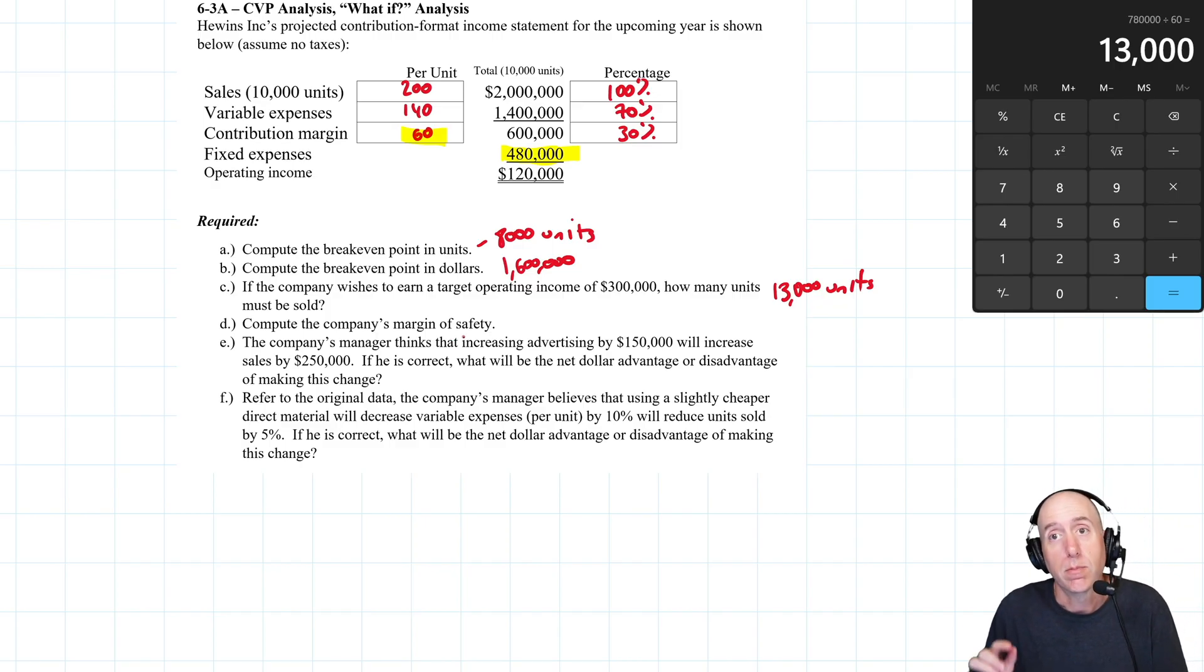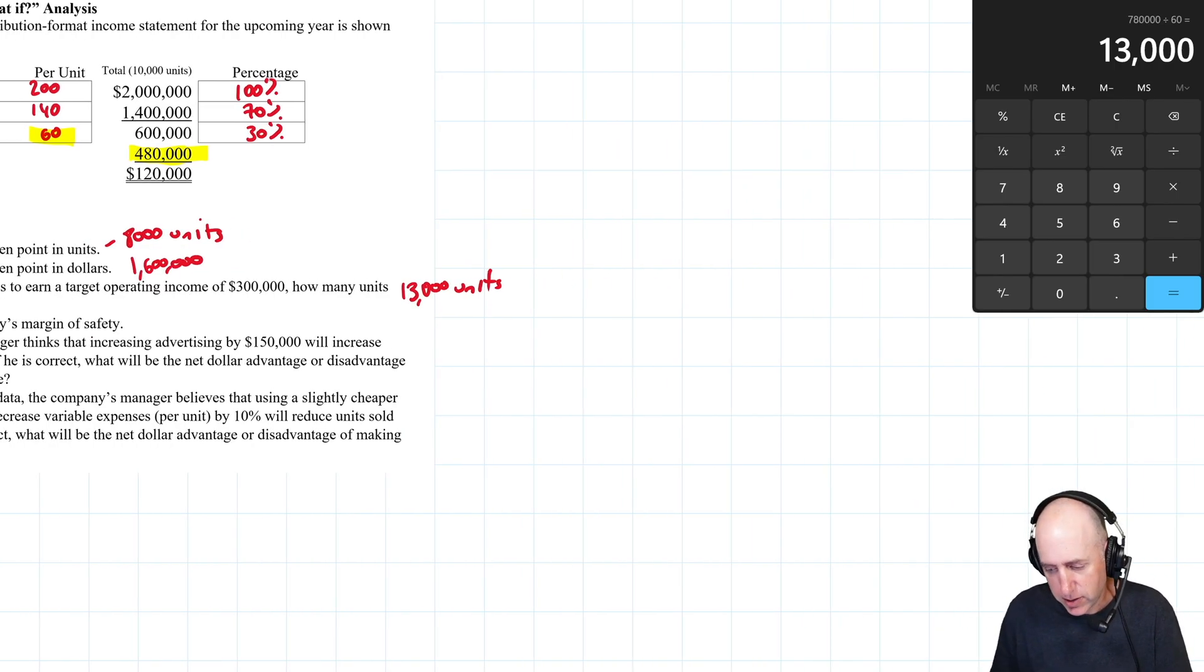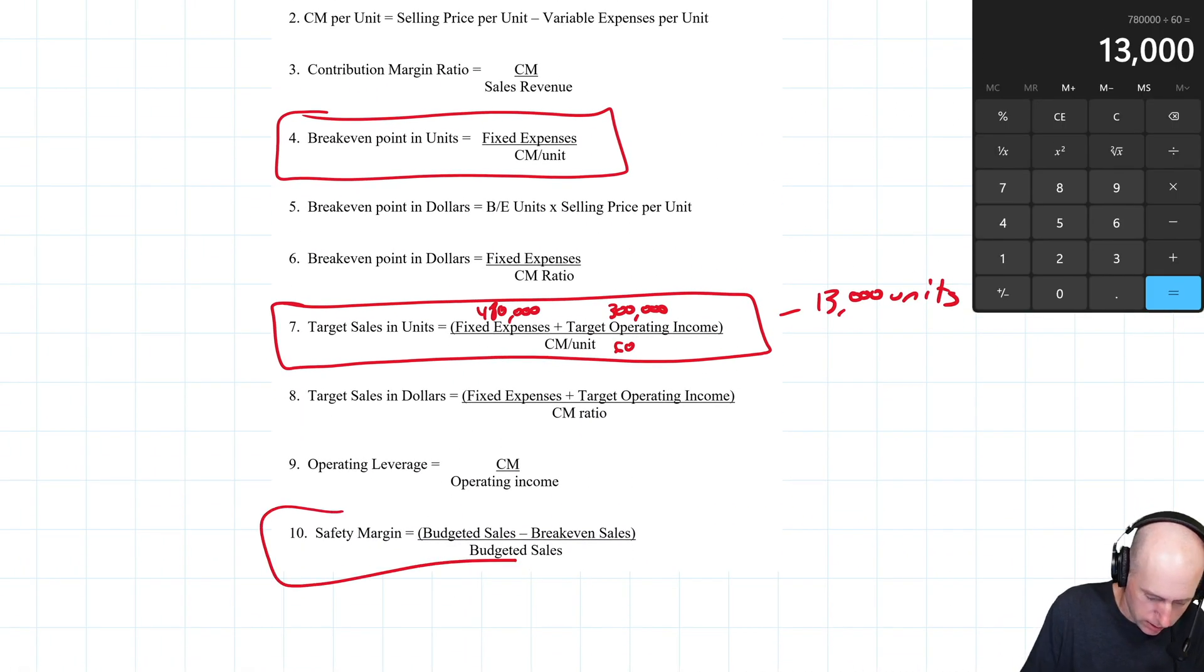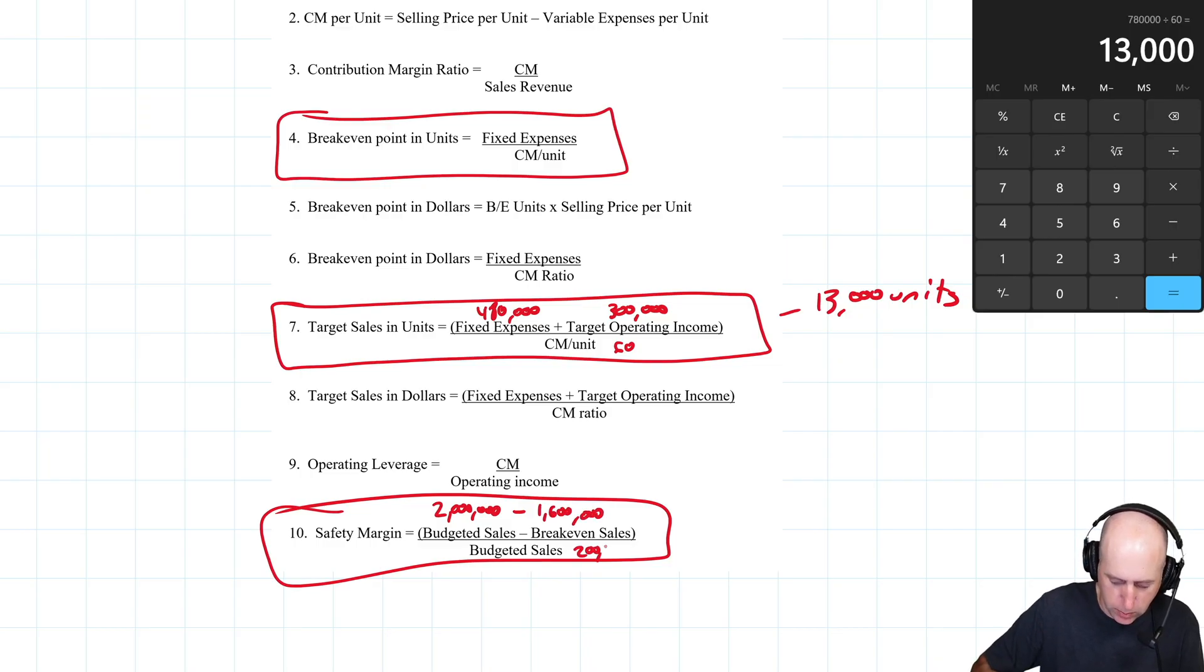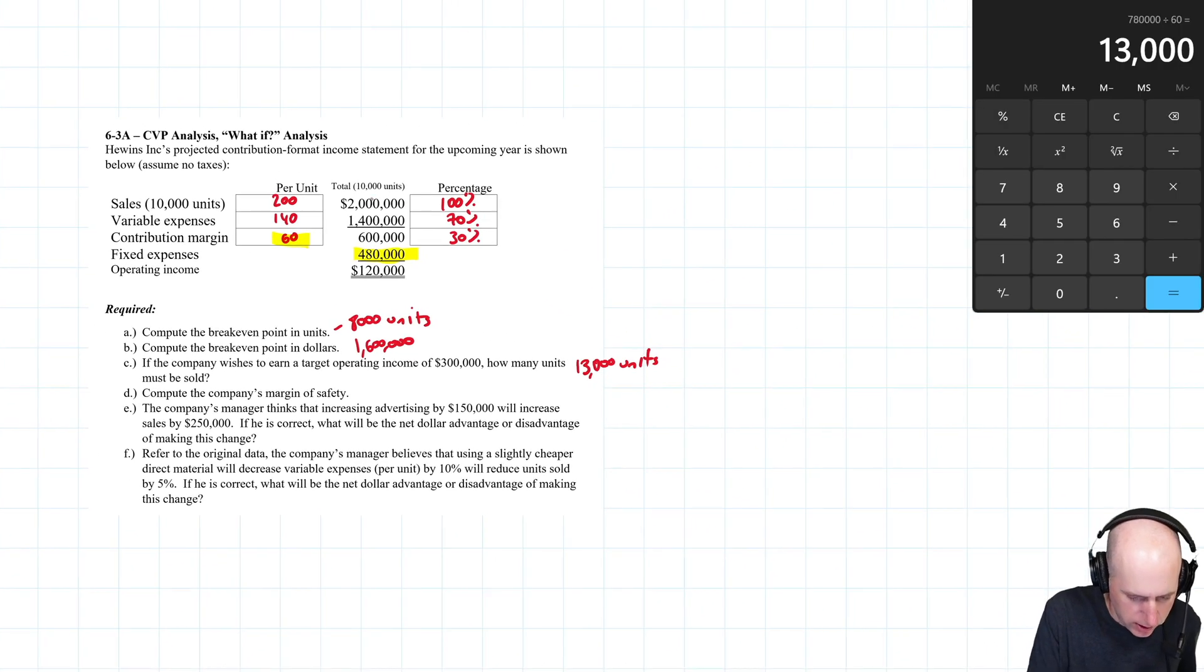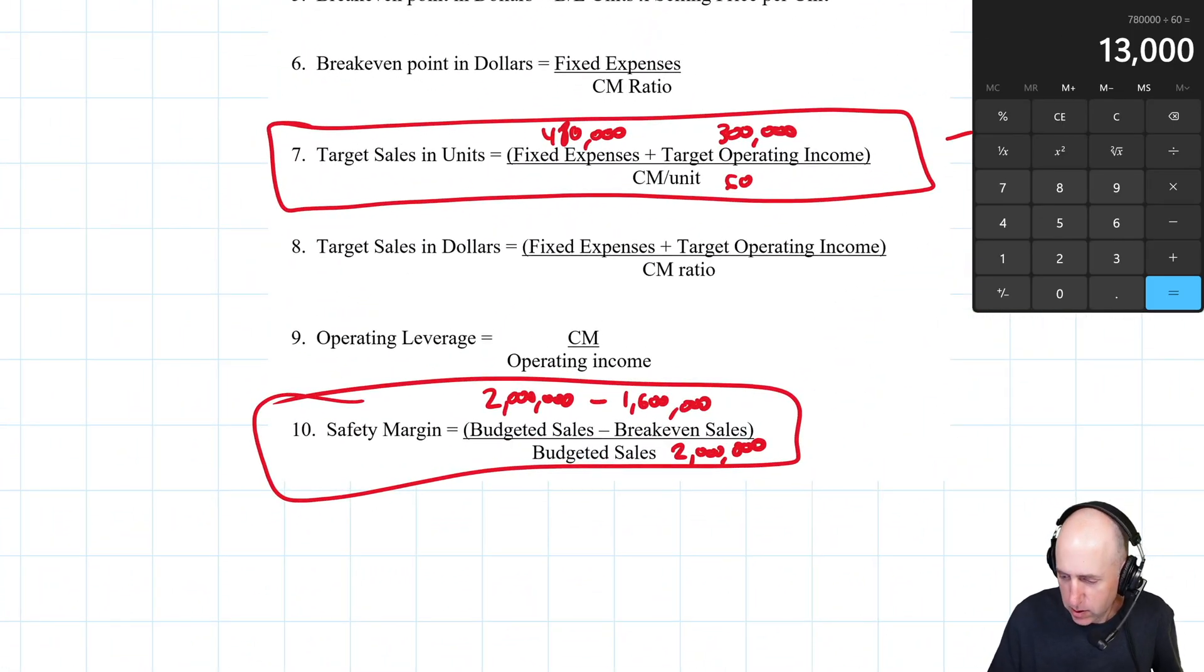Compute the margin of safety. The margin of safety is budget sales minus break-even sales divided by budget sales. Here's the formula. It's just our plan sales, which were $2,000,000 minus our break-even sales, 1.6 million divided by budgeted sales, 2 million. So 2 million minus 1.6 million, 400,000, divided by 2 million, 20%.